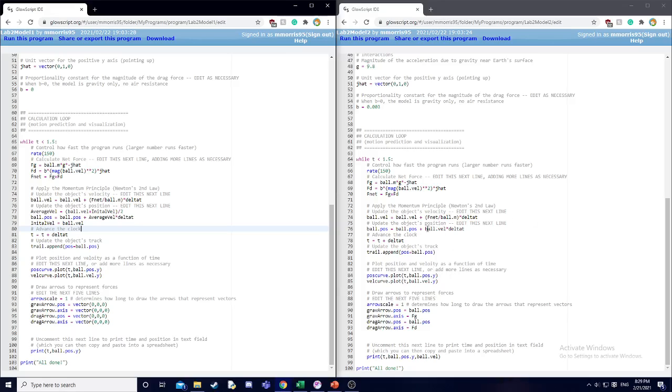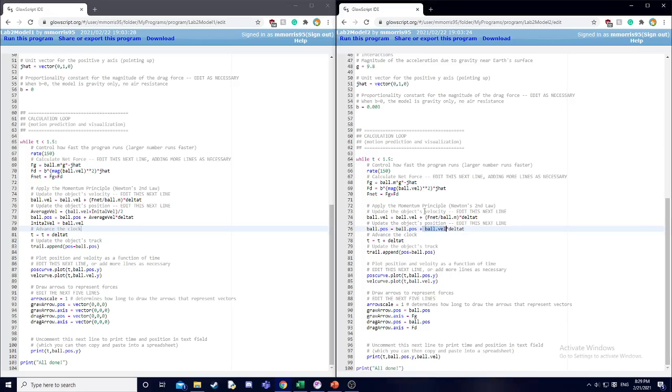For model two, I simply use the final velocity that I calculate in the line above to get the updated position.